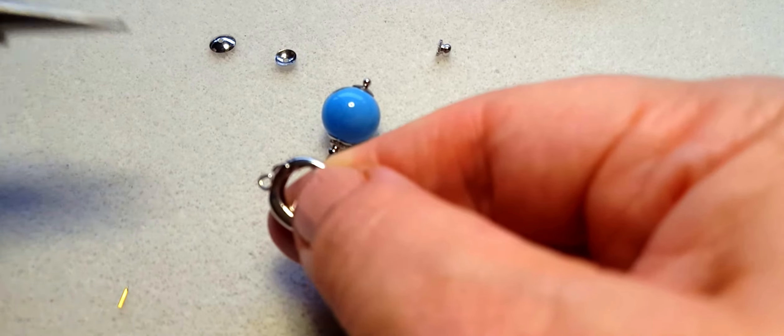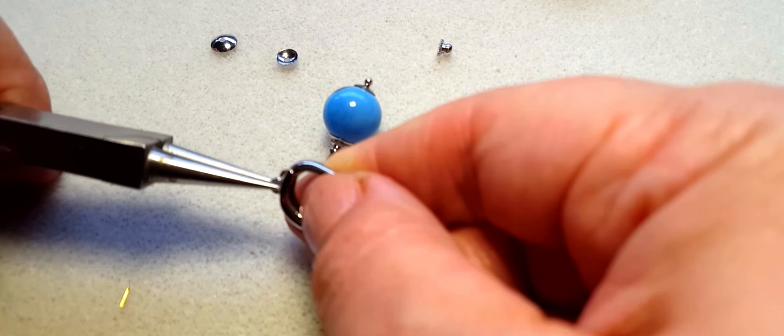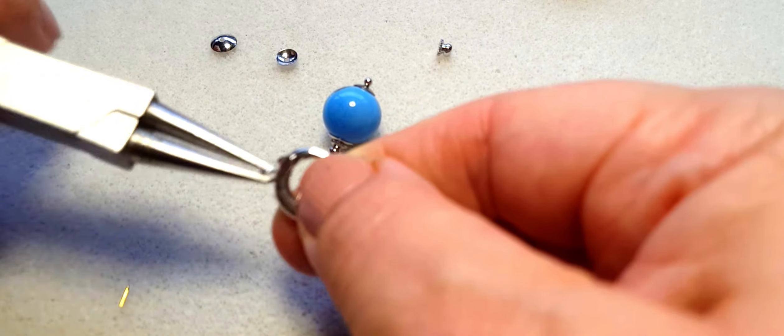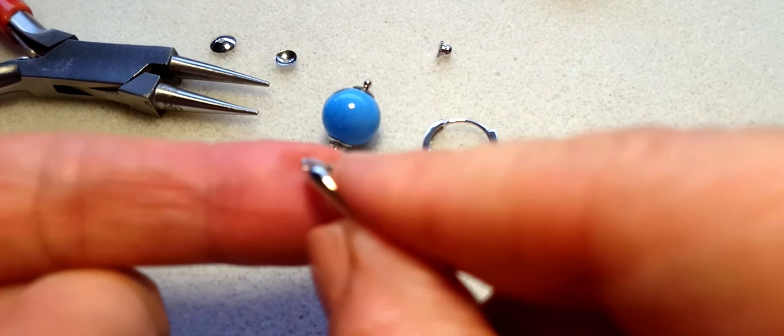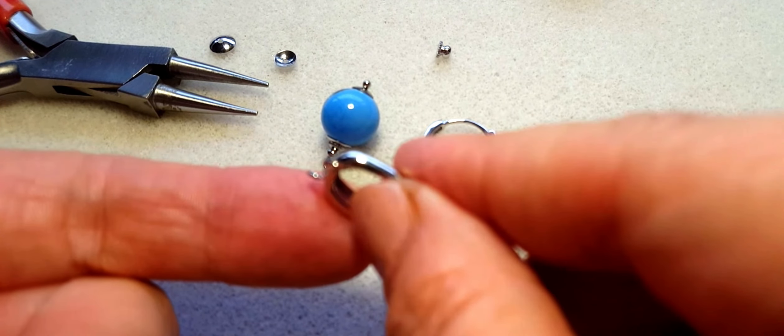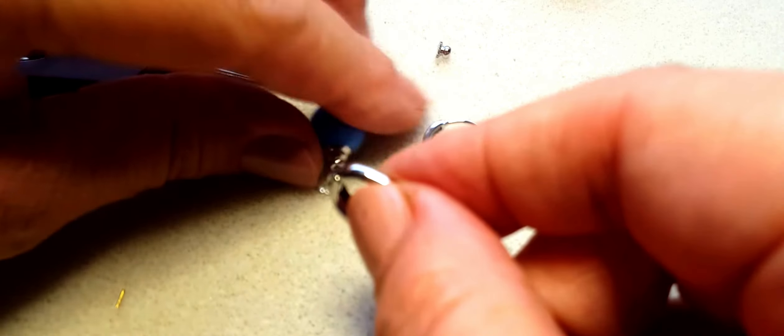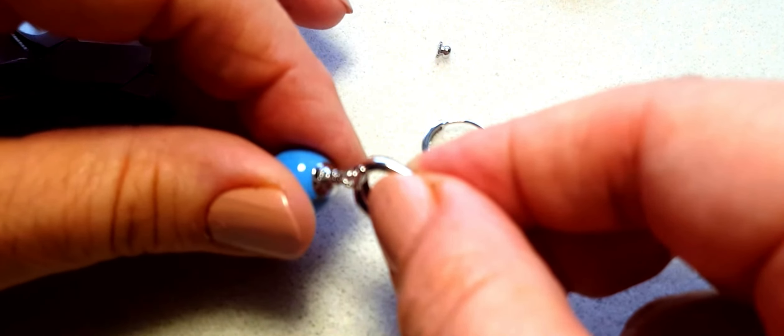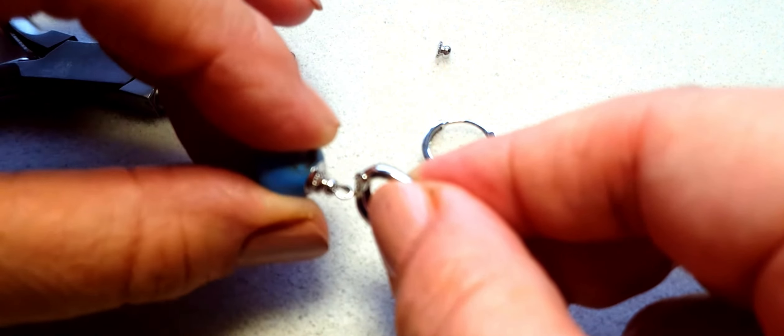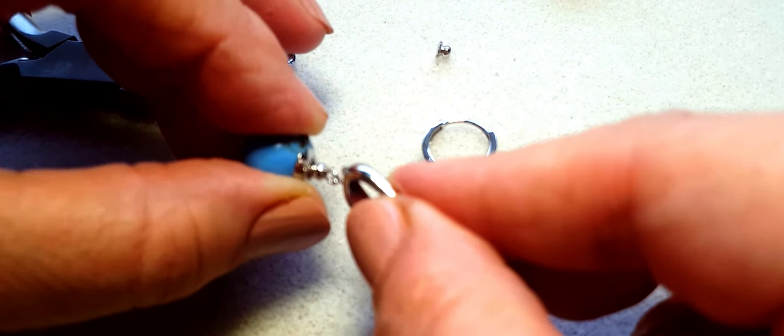Can you see how I did it? We open it sideways to prevent the metal from breaking. And then we can just hang our ear component, our drop, on it and close the loop carefully.